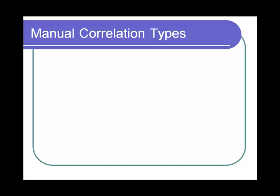Let's look at manual correlation first. Manual correlation can be done in three ways.